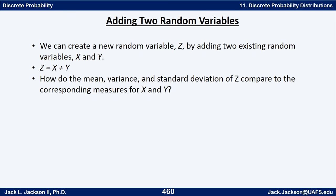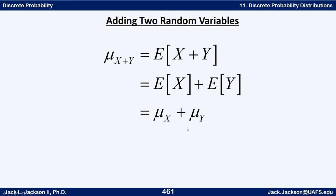Another way to combine random variables is to add them together. We let z equal x plus y and ask how the mean, variance, and standard deviation of z compare to those of x and y. It turns out that the expected value of x plus y equals the expected value of x plus the expected value of y — we simply add the means together to get the mean of the sum.